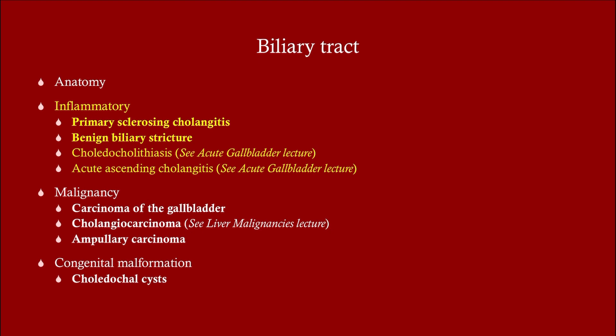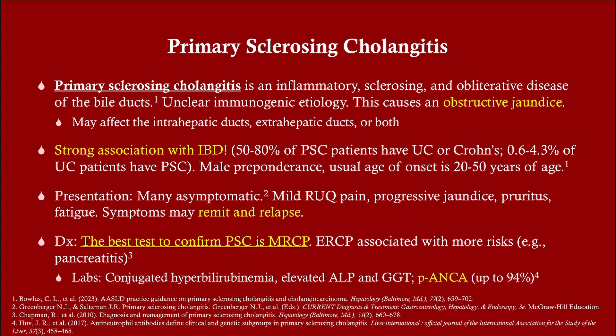So we're going to start with PSC. We don't really know what causes it — it's probably immunogenic, but it is inflammatory and it causes sclerosis, and therefore it's going to cause blockage, i.e., obstructive jaundice. You should know your symptoms of obstructive jaundice and how that can differ both on labs and symptomatology compared to hepatocellular jaundice.